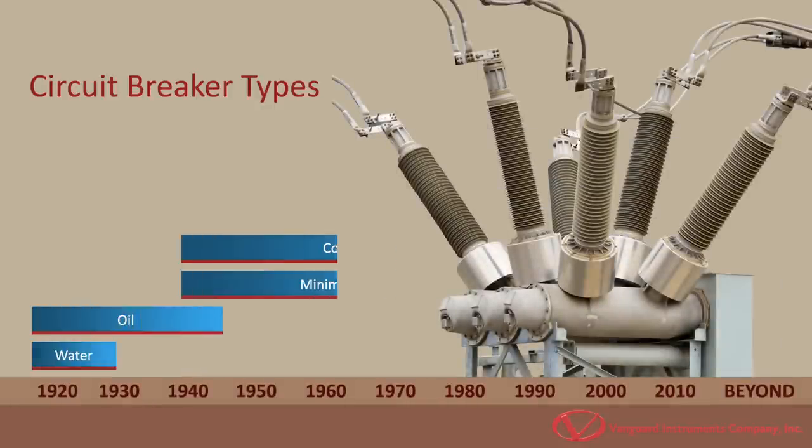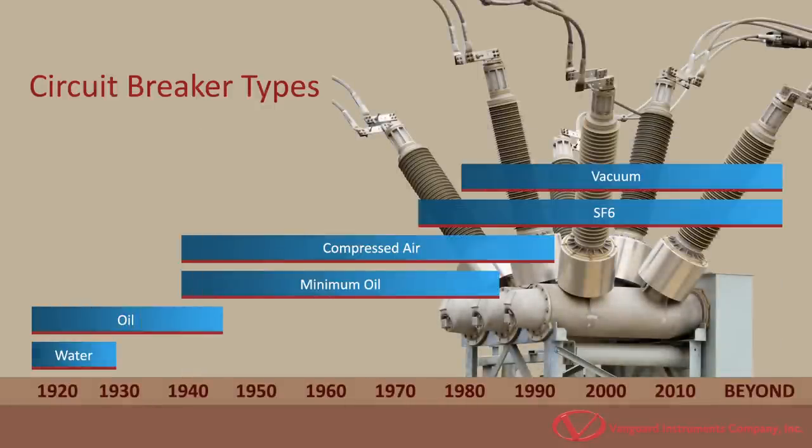This timeline shows the popularity of each breaker type over the years. Most breakers today are either vacuum or SF6 breakers due to their smaller size.